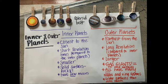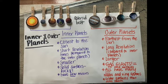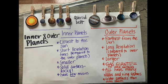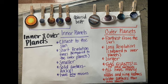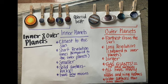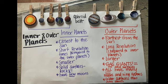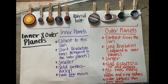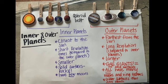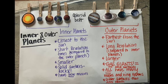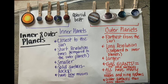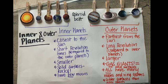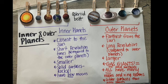Here is our final summary chart. The inner planets are closest to the Sun and the outer planets are farthest. Inner planets have a shorter revolution time than the outer planets. Inner planets are smaller, while the outer planets are much larger — the gas giants — while the inner planets have solid rocky surfaces. Inner planets have few moons, while the outer planets all have many moons and ring systems. And those outer planets are much colder than the inner planets because they're farthest away from the Sun.